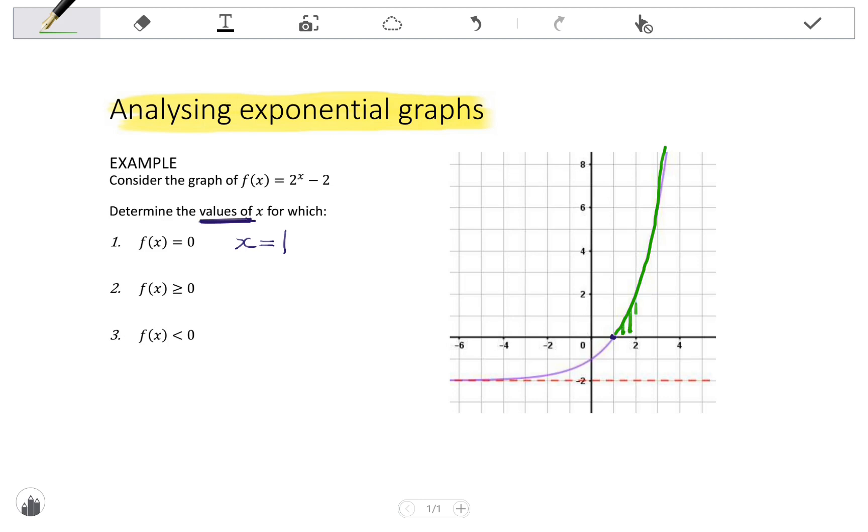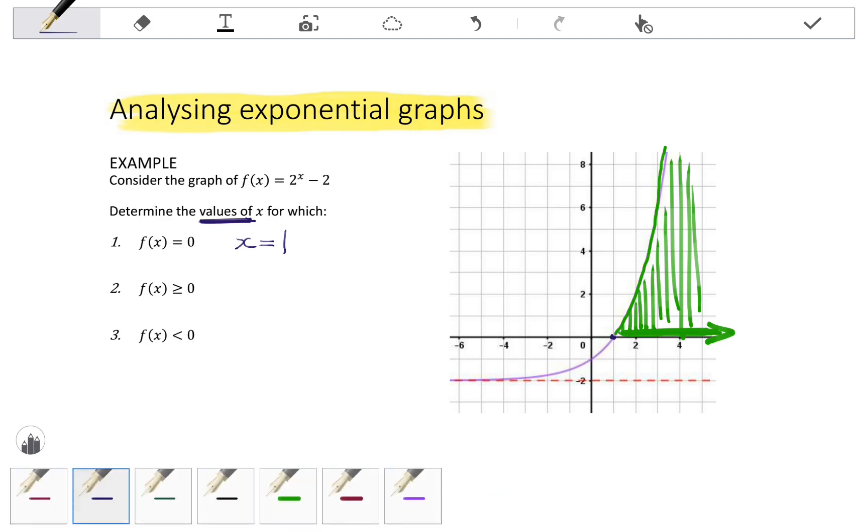We find the x values for each point by looking vertically down. So the x values are here, and remember, this graph would continue forevermore, so we go to infinity. To represent these x values here, we say that they are the values that are greater than 1. So as an inequality, that would be x is greater than 1. But because it also asked for the values where f(x) is equal to 0, we will include that 1.